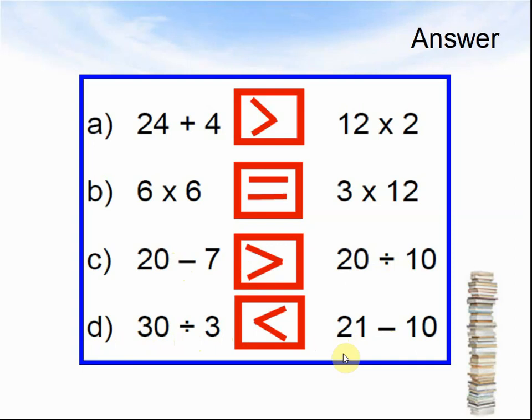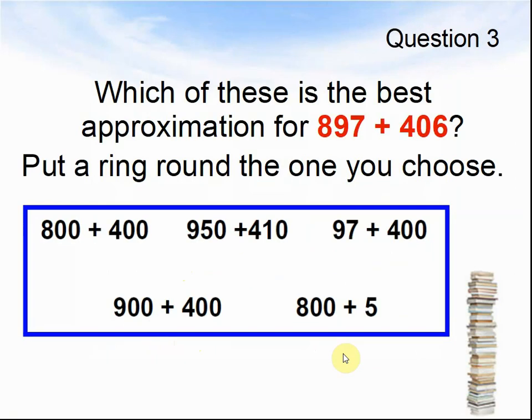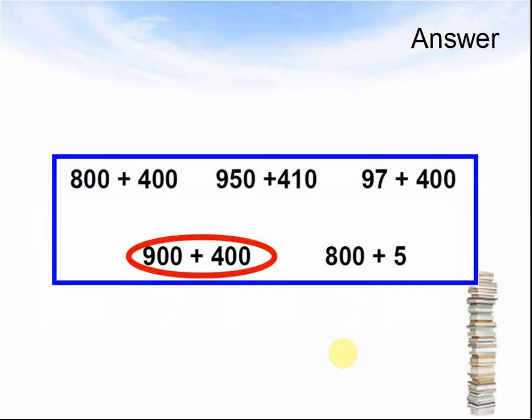Let's look at the next question. Question 3. Which of these is the best approximation for 897 plus 406? Put a ring around the one you choose. Pause the video until you are ready for the answer. Here comes the answer. Answer: 900 plus 400 is the best approximation.